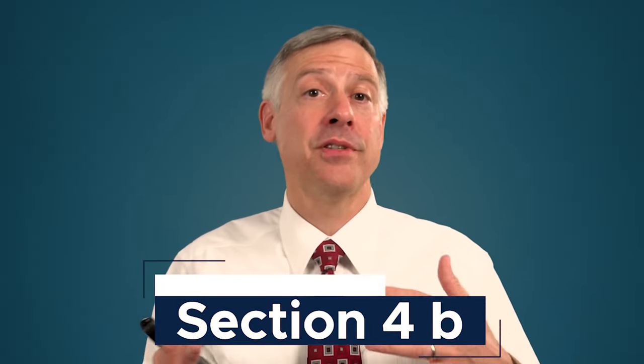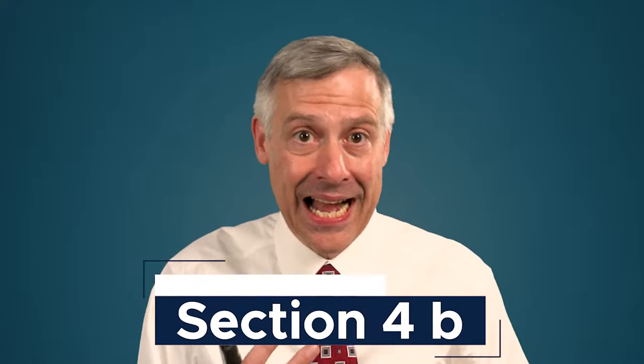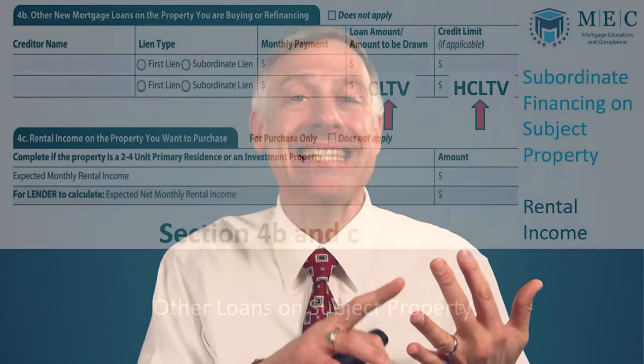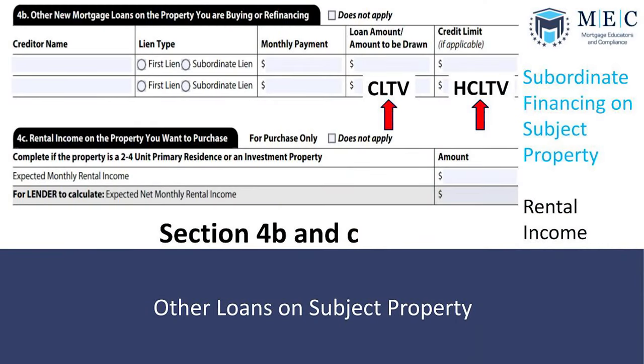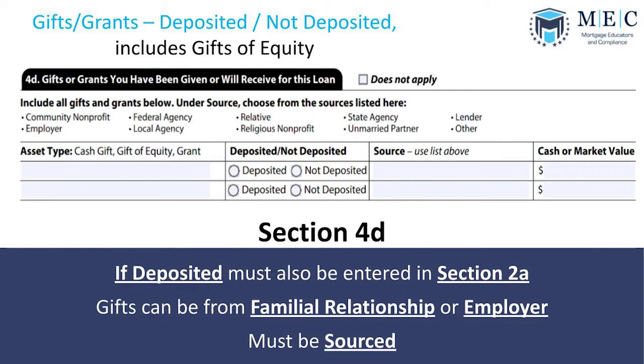In Section 4b, we capture any other loans being taken out simultaneously with the mortgage — for part of the down payment. We previously discussed LTV, CLTV, and HCLTV. If there's a HELOC involved, this is where we capture that subordinate financing information. Gifts and grants, whether deposited or not, go in Section 4d.